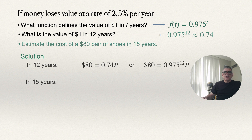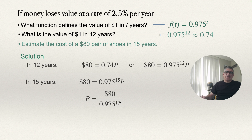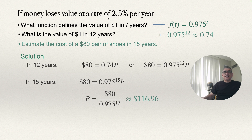I want you to notice that in 15 years, with $80, I can buy 0.975^15 multiplied by the price p. So if this is the pair of shoes, I can only buy this fraction of the pair with $80. To find the actual price of the shoes, I just solve this equation for p. That number multiplying here moves to the bottom of a fraction, so the price equals $80 divided by 0.975^15. Using a calculator, that gives $116.96 — the future price of this pair of shoes, assuming money loses value at that rate.